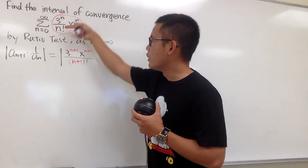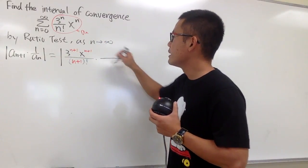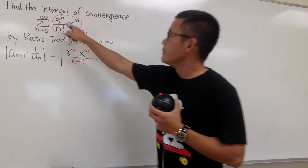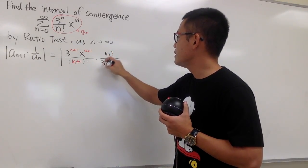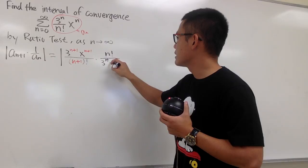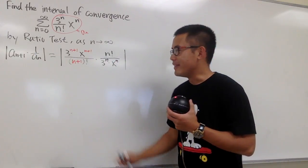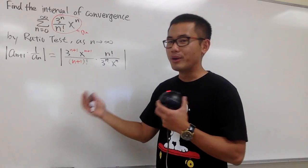And then we do the reciprocal of the original, so we multiply by, this will be on the top, the n factorial, and both this and that will go on to the denominator, which is the 3^n times x^n, inside of the absolute value. And now, focus on this part here, breaking this apart.